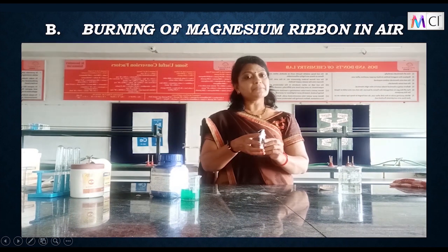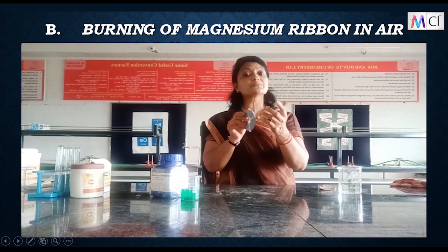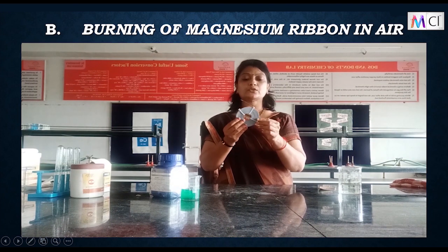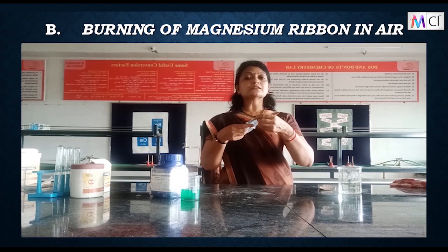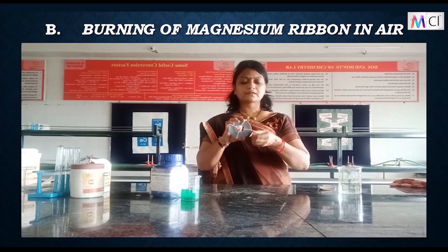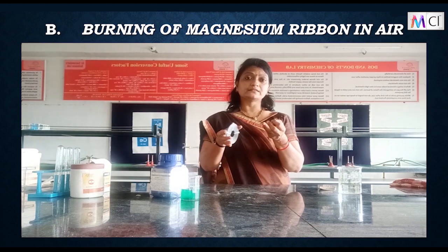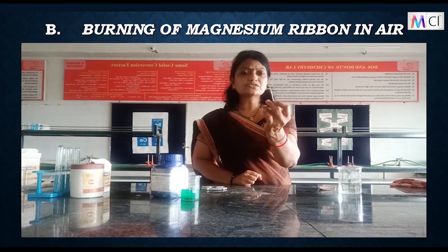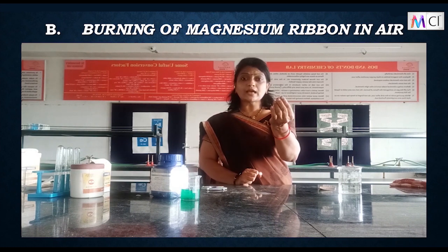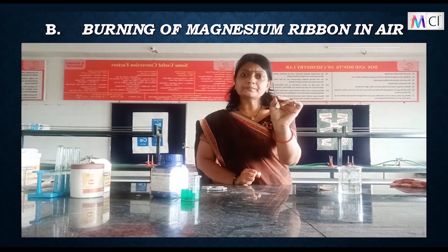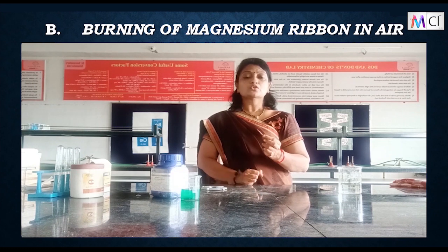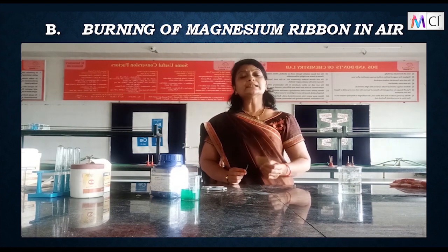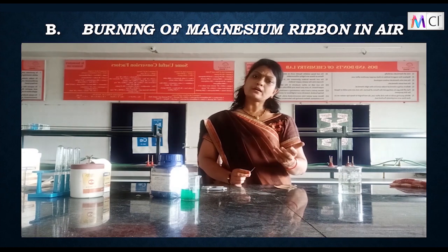Next we have the magnesium ribbon. Magnesium is a metal and, as metals are malleable, it can be made into thin sheets. It undergoes corrosion very fast, forming a magnesium oxide layer which gives it a dull appearance. We need to take sandpaper and scrub it to remove the oxide layer and expose the magnesium metal, and then we will burn it to see whether a chemical or physical reaction has taken place.